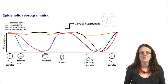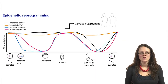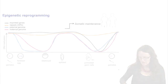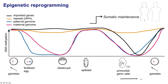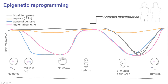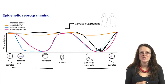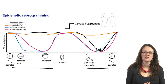Coming back to this diagram shown previously, we know that there are two rounds of reprogramming that happen in primordial germ cell development and again in early embryonic pre-implantation development. While the maternal and paternal genome are cleared in both cases, and the imprinted genes are only cleared during primordial germ cell development, the IAPs are generally not really cleared — they tend to be resistant to this reprogramming.